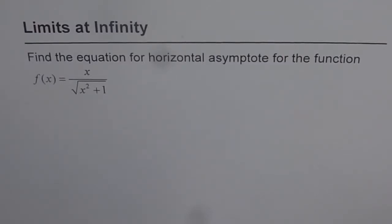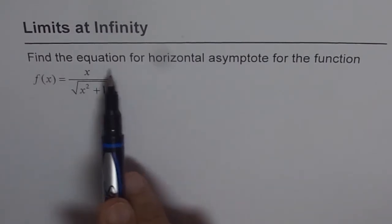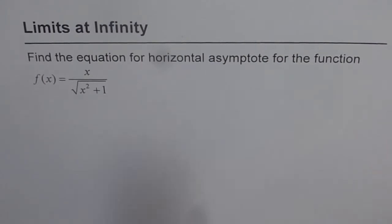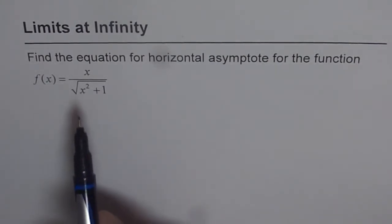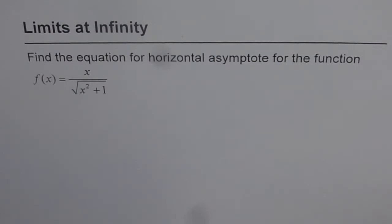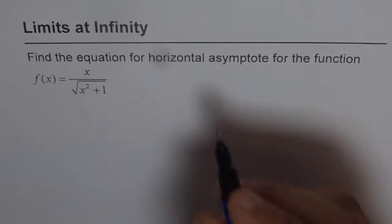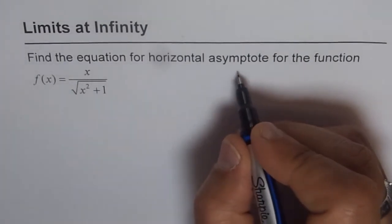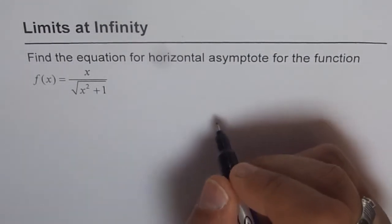Here is an application of limits at infinity. The question before us is: find the equation of the horizontal asymptote for the function f(x) = 2x divided by the square root of x squared plus 1. Let's understand what a horizontal asymptote is, and then we'll solve the question.